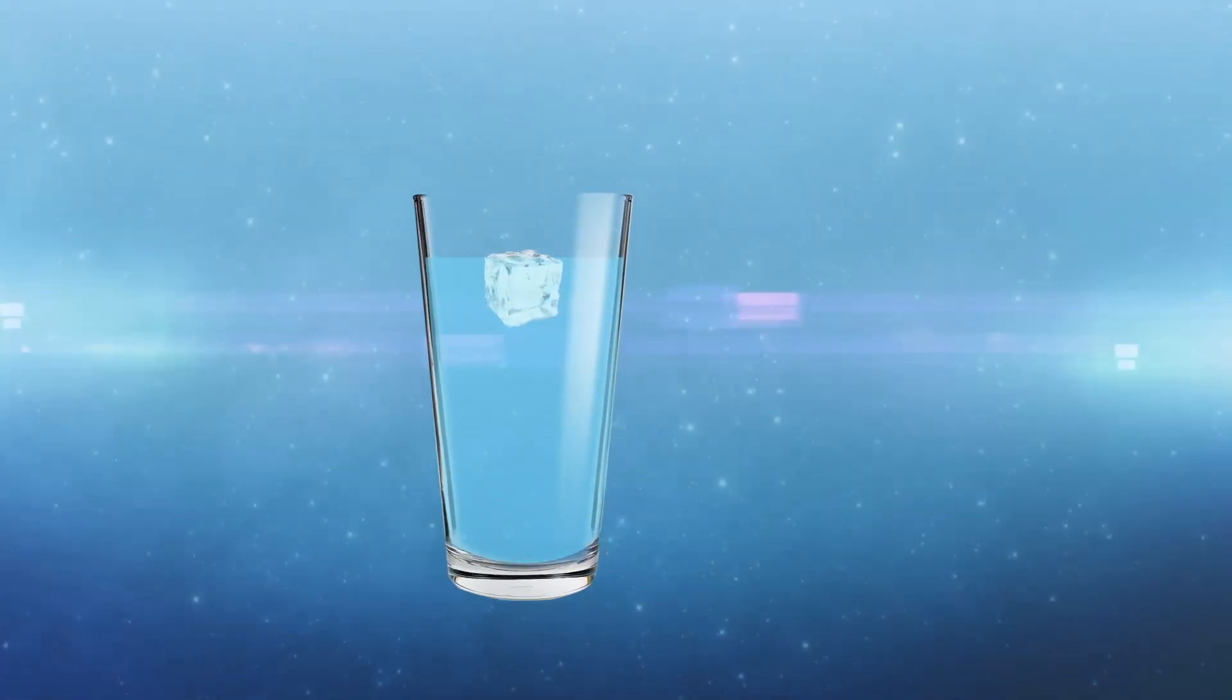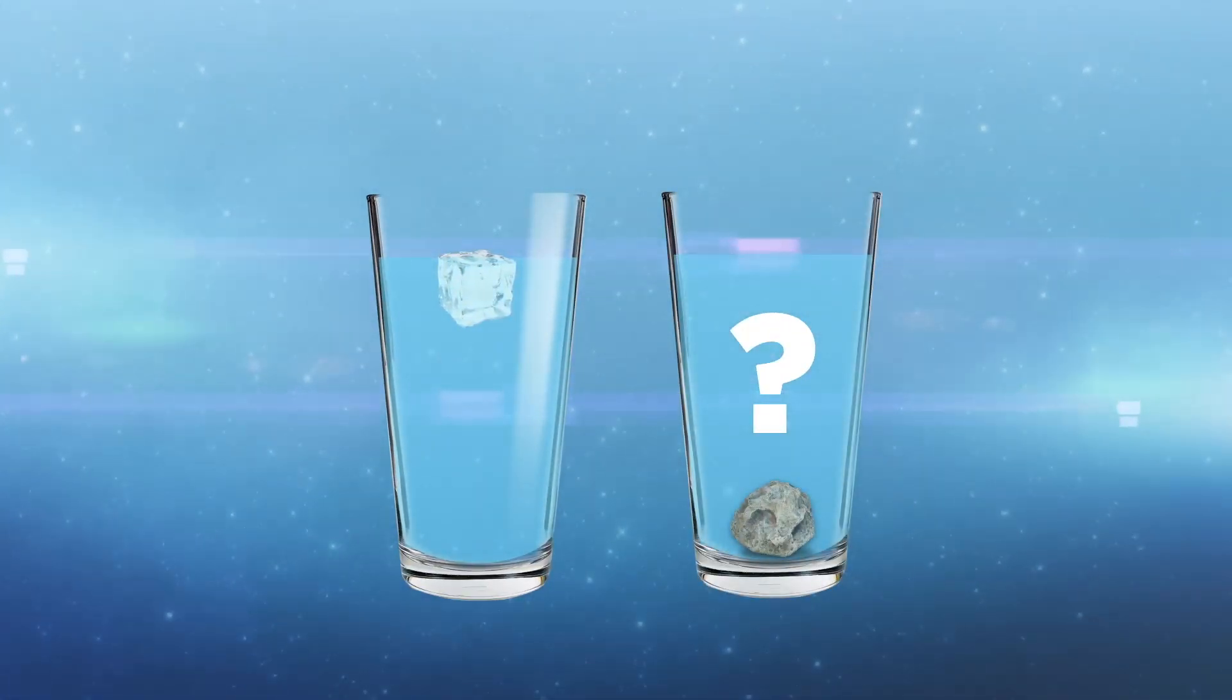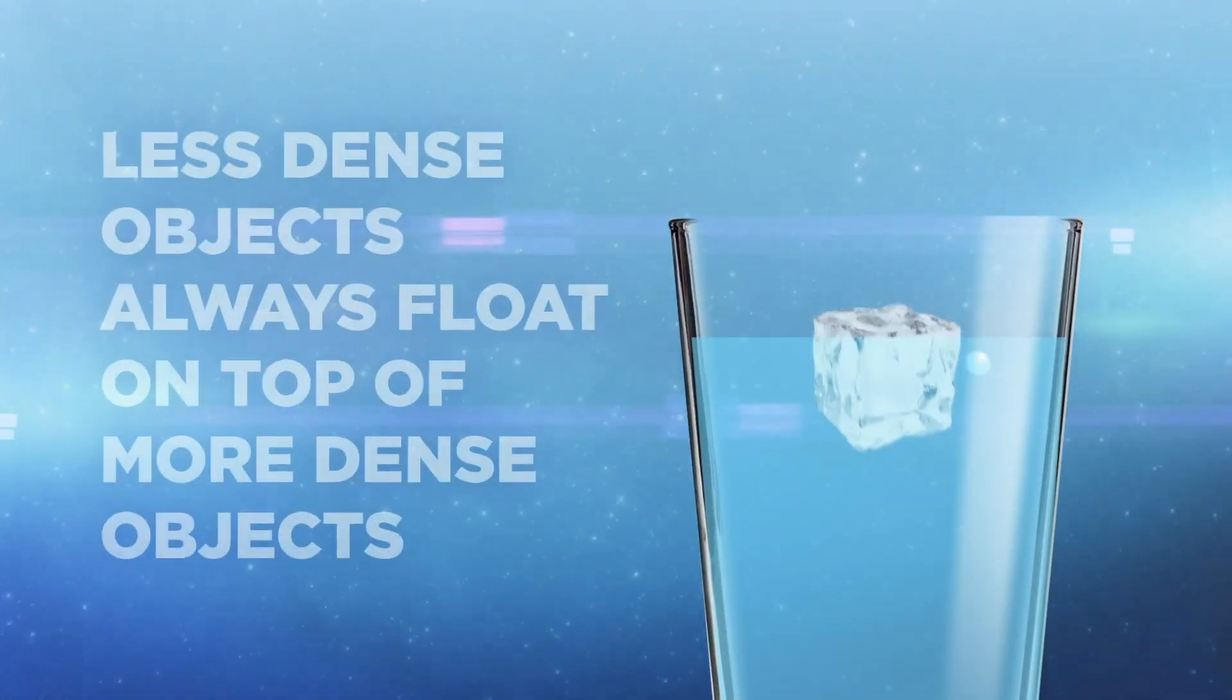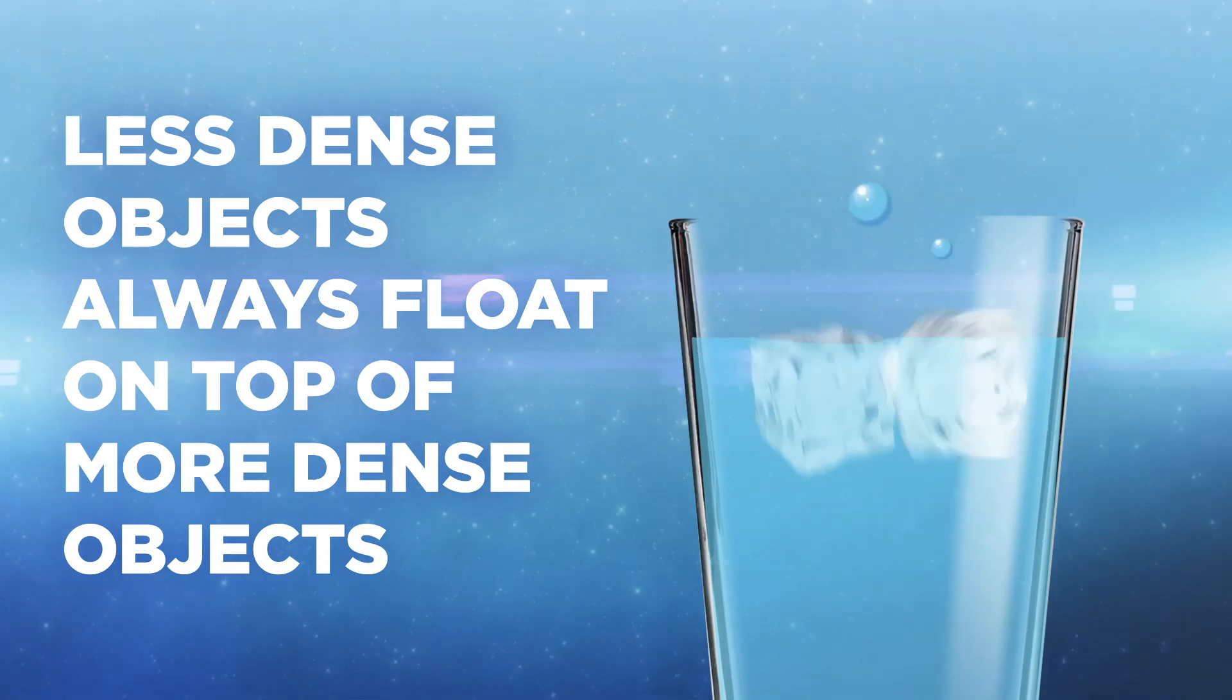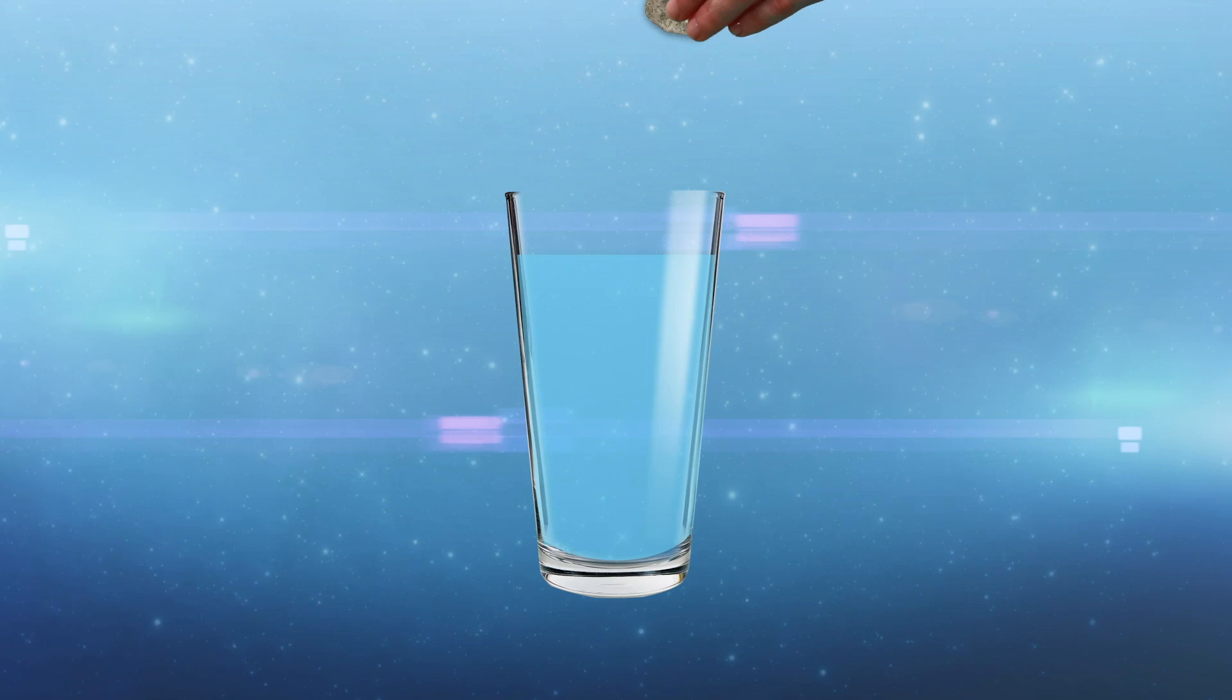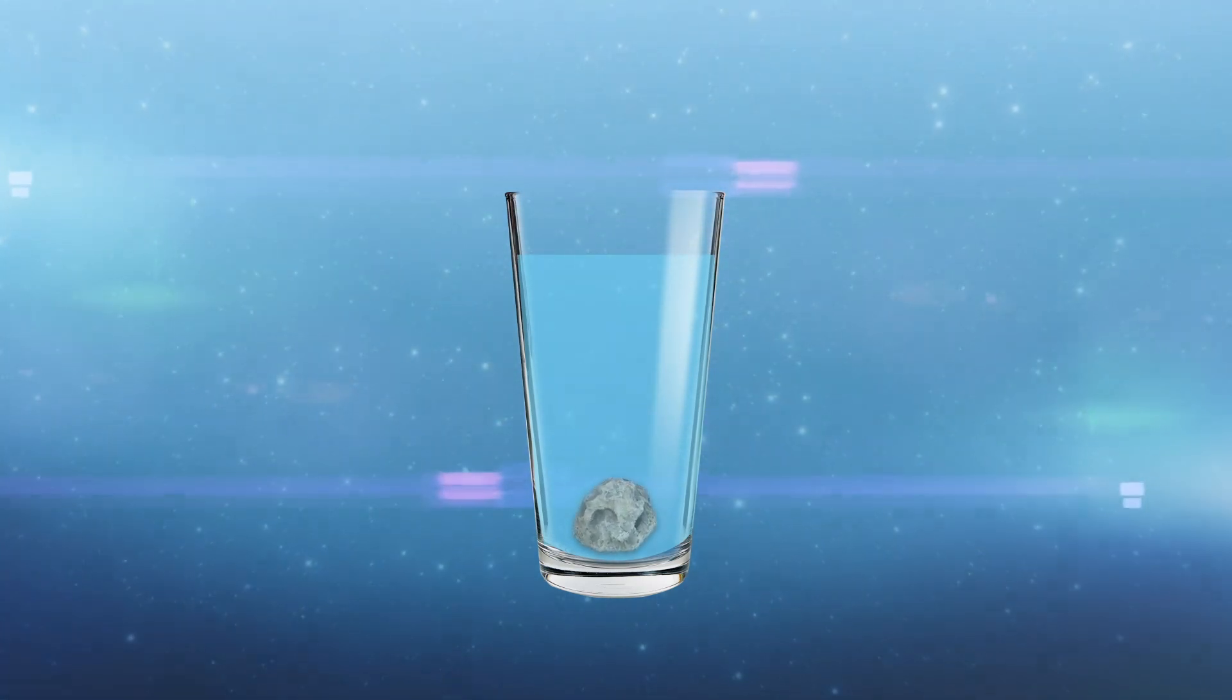Why does an ice cube float in a glass of water, but a rock of the same size doesn't? Because of density. The ice cube has less density than the water it is in. Less dense objects always float on top of more dense objects. Since the rock has a higher density than the water, it sinks to the bottom.